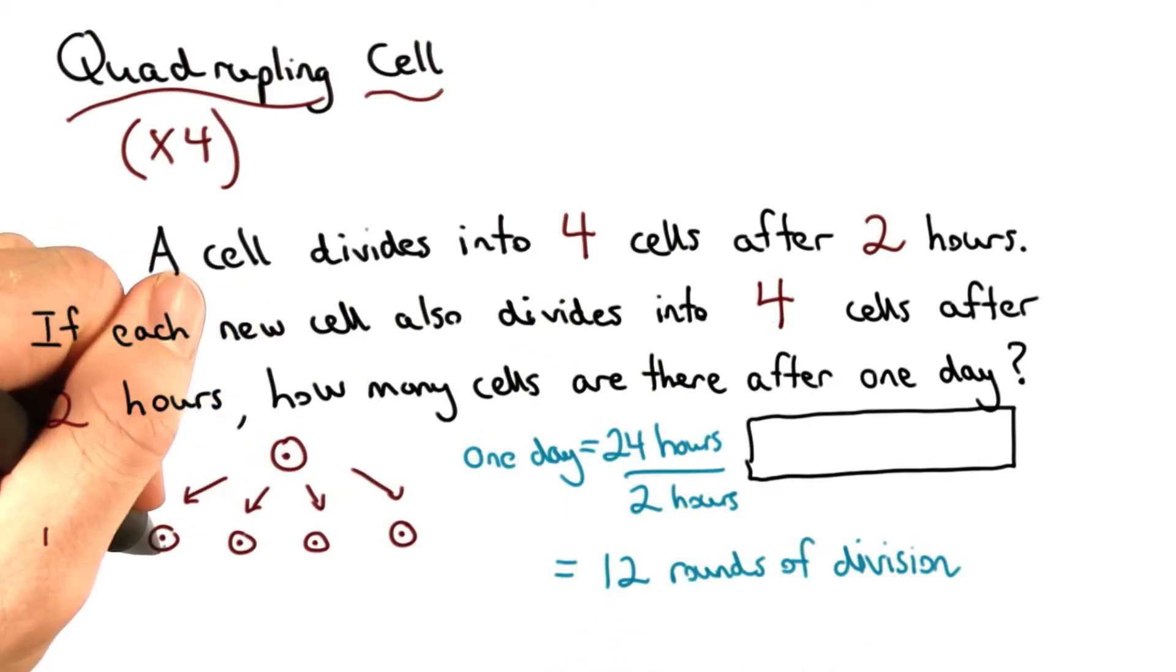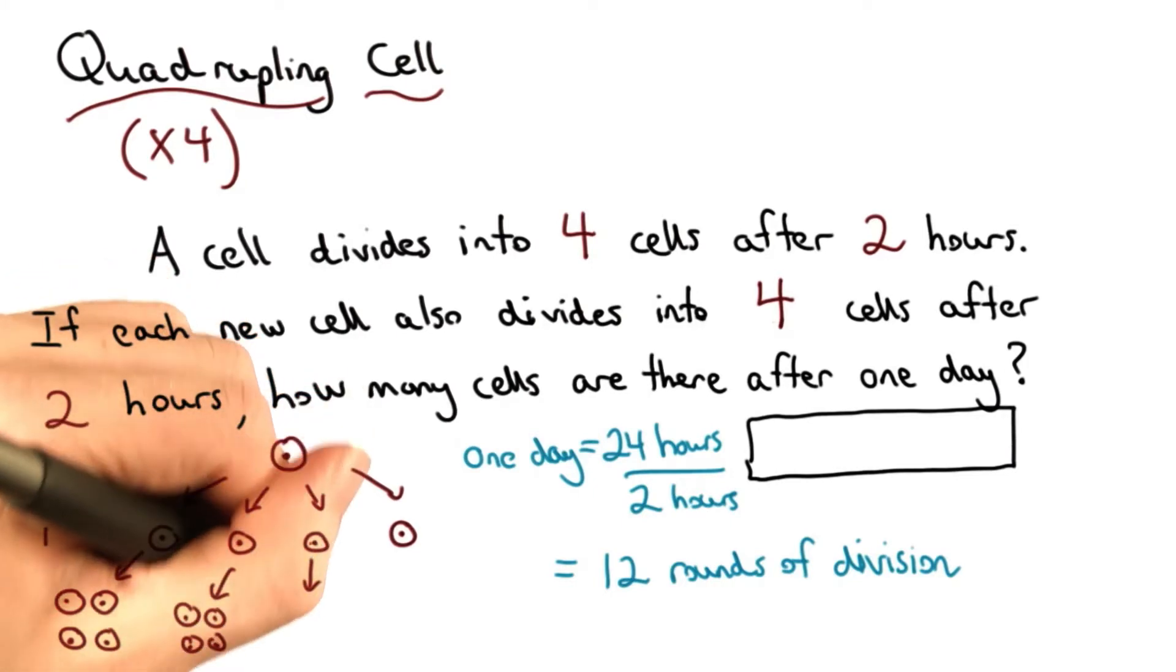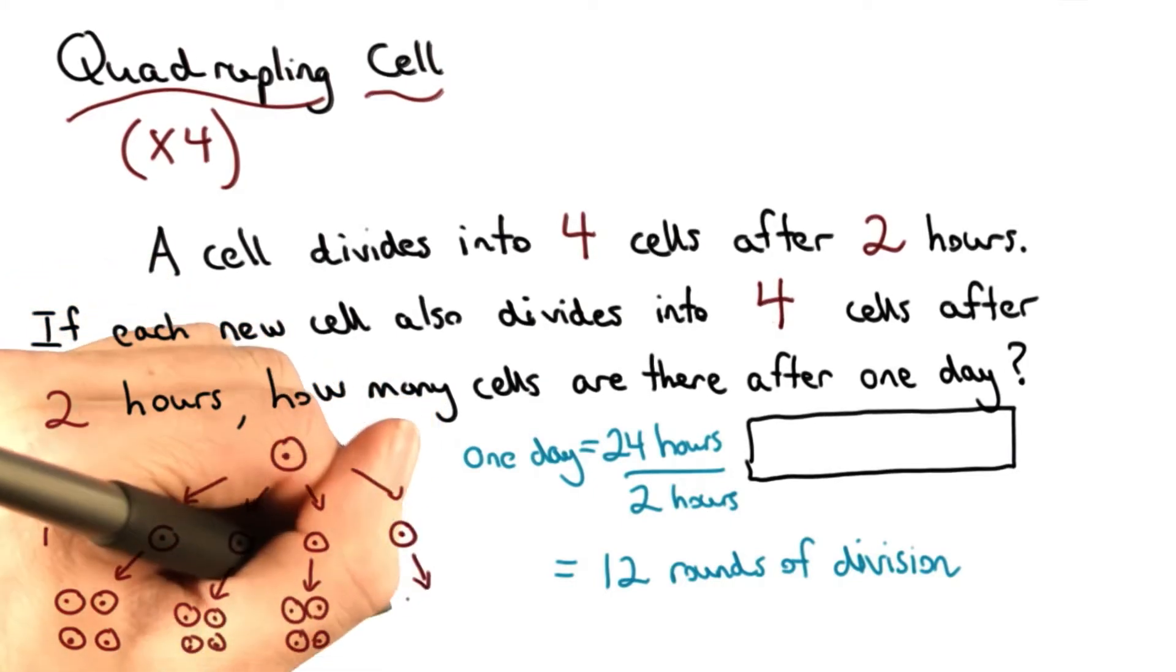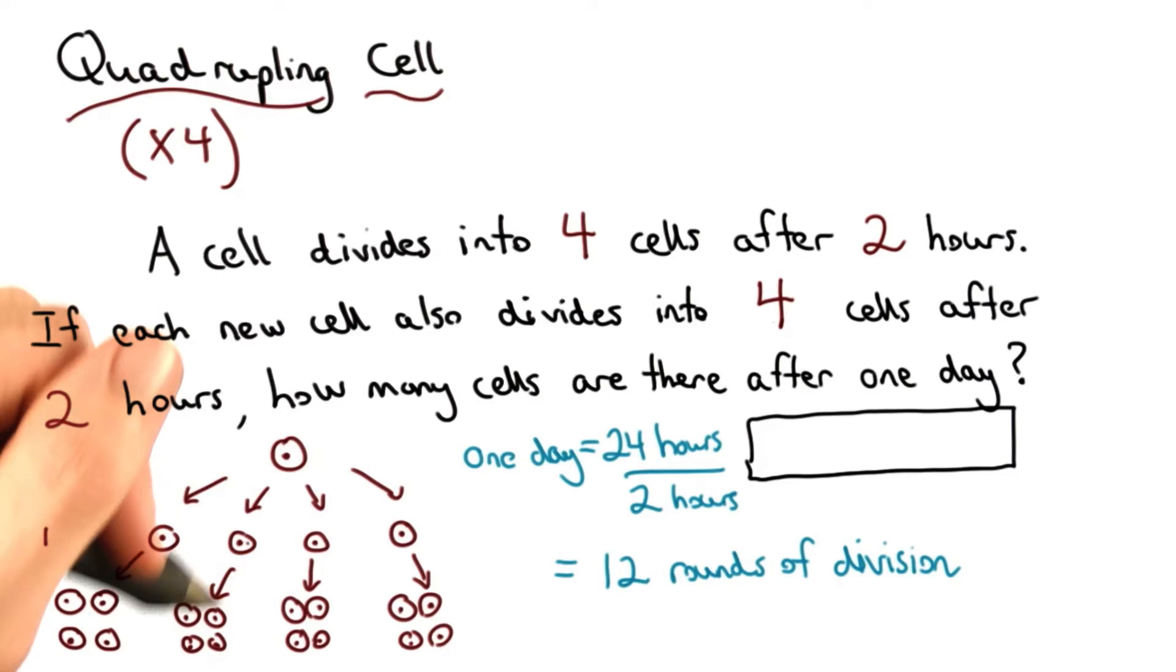My cells are quadrupling each time after a round of division. I went from 1 cell to 4 cells. So remember, this cell would split into 4 more cells. This one would too, and this one would too. And so would this last one. I went from 1 to 4 to 16. I'm quadrupling the number of cells I have.